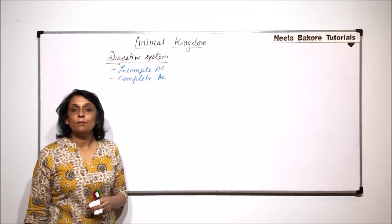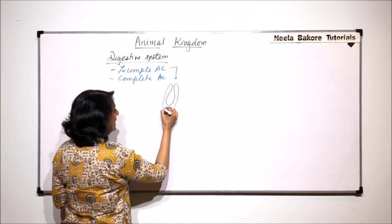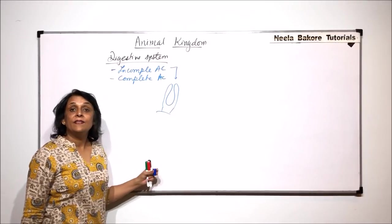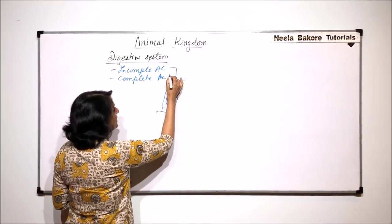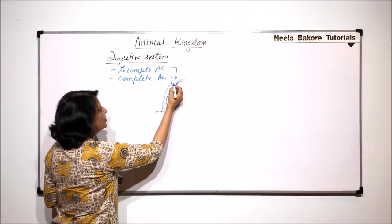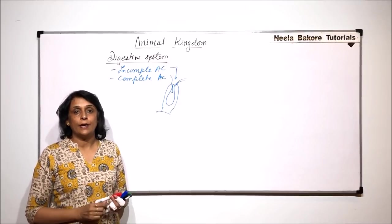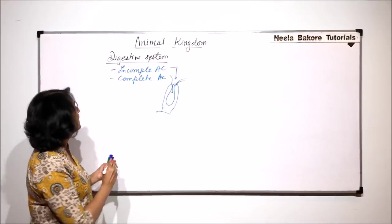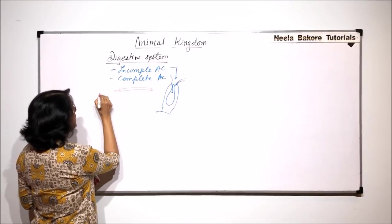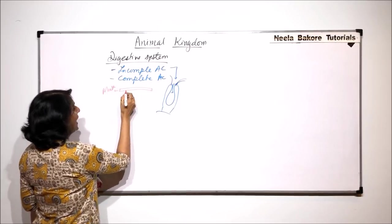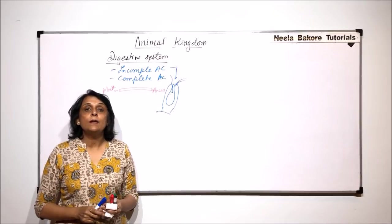Incomplete alimentary canal means there is only one opening which is acting as the inlet as well as the outlet. This is what is seen in case of coelenterates or cnidarians like hydra. There are tentacles and only one opening through which food enters and undigested food exits. In the case of a complete alimentary canal, it is a complete digestive tube which has a mouth at one end and anus at the other end, and this is the most common type of system.